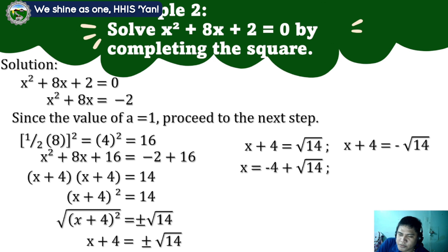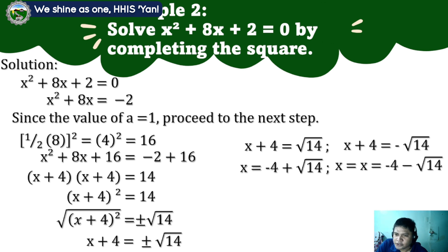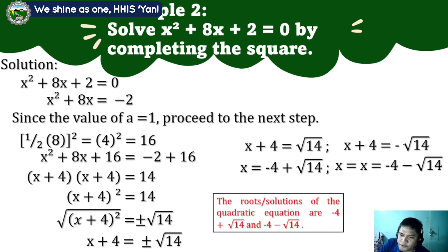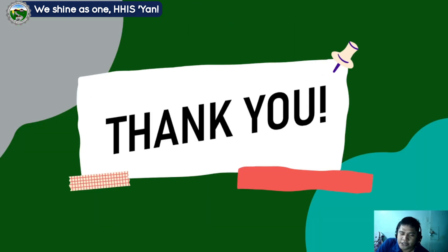Similarly, for the second solution, subtract 4 from both sides: x equals negative 4 minus square root of 14. Therefore, the roots or solutions of the quadratic equation are negative 4 plus square root of 14 and negative 4 minus square root of 14. I hope you learned something about how to solve quadratic equations by completing the square. Thank you for listening.